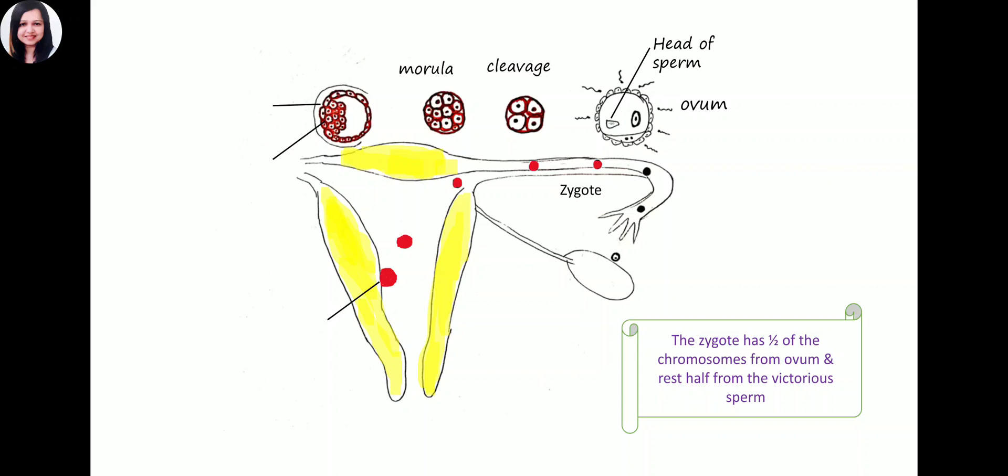Meanwhile, the rising level of progesterone from the corpus luteum of pregnancy helps build glycogen stores in the endometrium, preparing itself for receiving this product. The morula converts into blastocyst, which has an outer trophoblastic cell layer and inner cell mass. This inner cell mass will later convert into embryo. Now the blastocyst is in the endometrium wall for implantation.